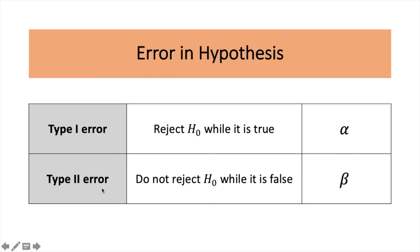Type 2 error is when you do not reject the null while it is false. It means you were supposed to reject the null, but you did not reject it. And we denote Type 2 error as beta.